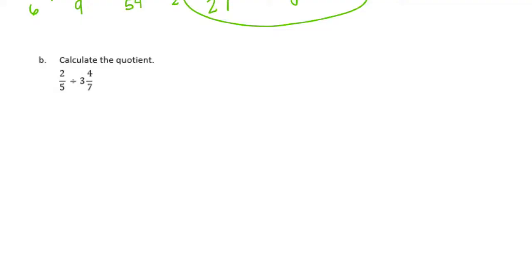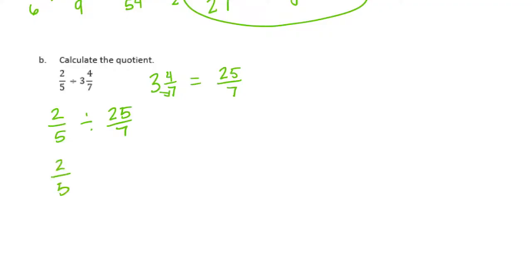So now they've just given us the expression. We need to take three and four-sevenths and make it into an improper fraction. Three times seven is twenty-one, plus four is twenty-five sevenths. We have two-fifths divided by twenty-five sevenths. I'm going to invert and multiply: two-fifths times seven twenty-fifths. Two times seven is fourteen. Five times twenty-five is one hundred twenty-five. That cannot be reduced, so we get fourteen one-hundred-twenty-fifths.